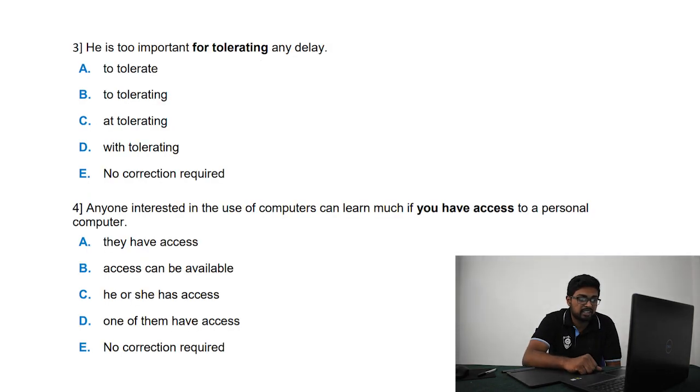Next question: he is too important for tolerating any delay. This type of question is to note the keyword, which is 'too,' which makes the person very important. It is another way of telling this person is very busy that he can't afford to be late or be made late by anybody. So the correct answer would be: he's too important to tolerate any delay. That just goes well with the grammatics.